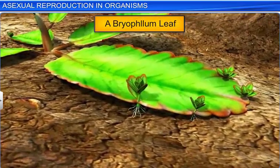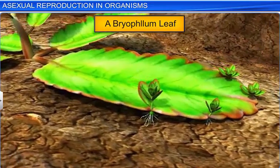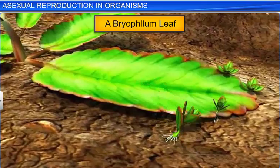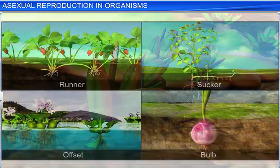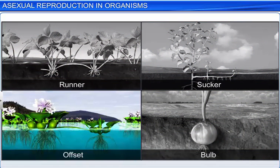Bryophyllum, on the other hand, have notches on the margin of their leaves that give rise to adventitious buds that fall off and later germinate into new plantlets. Apart from buds and nodes, runners, suckers, offsets, and bulbs are other examples of vegetative propagules in plants.